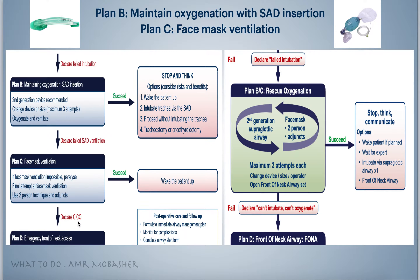If we fail, move directly to front of neck access. For ICU patients it is exactly the same, but the only difference is that we do Plans B and C together, not as two distinct steps. We try Plan B once, then if we fail we do face mask ventilation using the two-person technique, then go back to try a second time with the laryngeal mask, then face mask ventilation again, then a third laryngeal mask attempt.